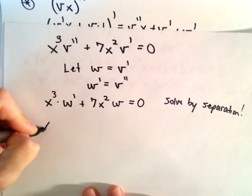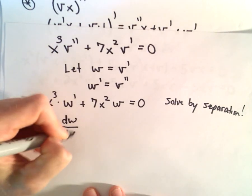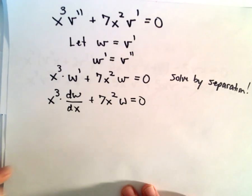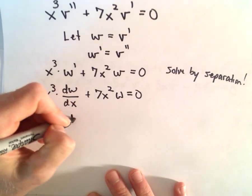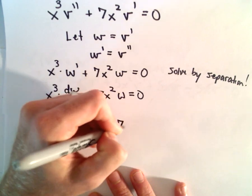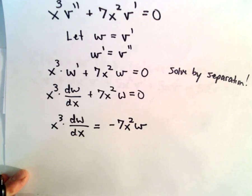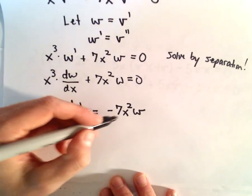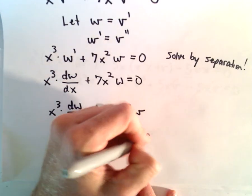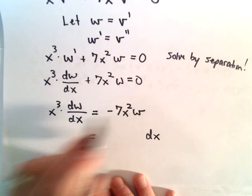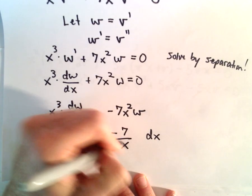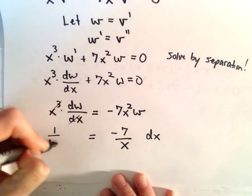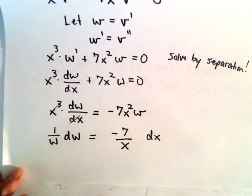Rewriting: x cubed times dw/dx plus 7x squared times w equals 0. Moving the second term over gives x cubed times dw/dx equals negative 7x squared times w. Dividing both sides by x cubed and multiplying by dx: dw/w equals negative 7x squared divided by x cubed times dx, which simplifies to 1/w dw equals negative 7/x dx.